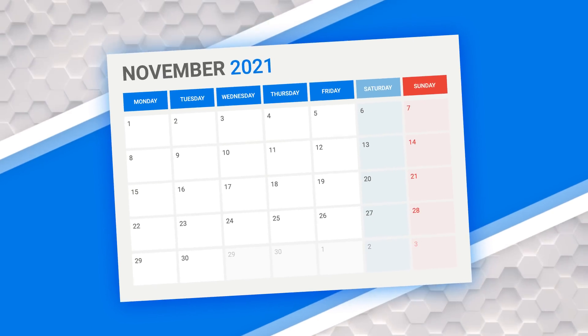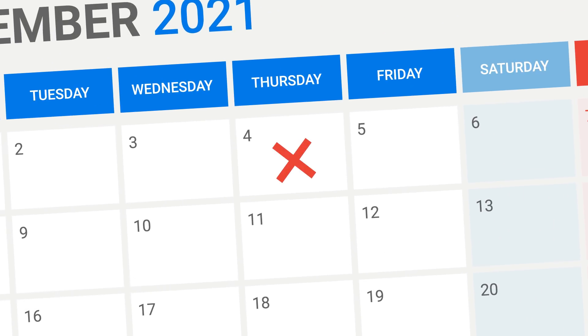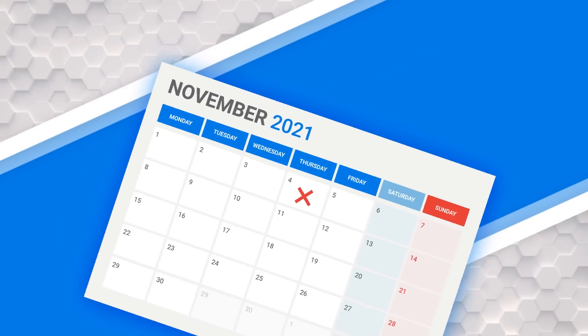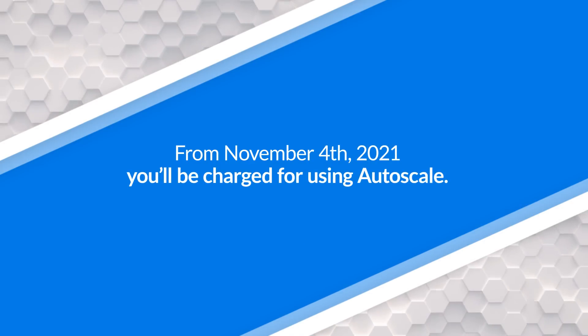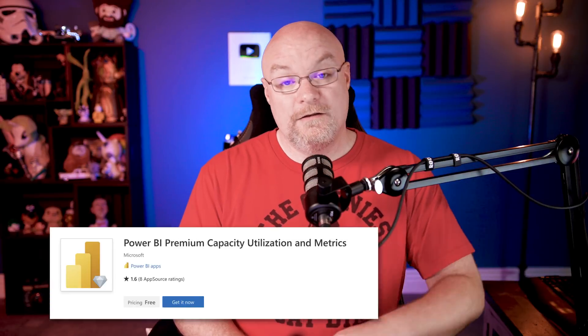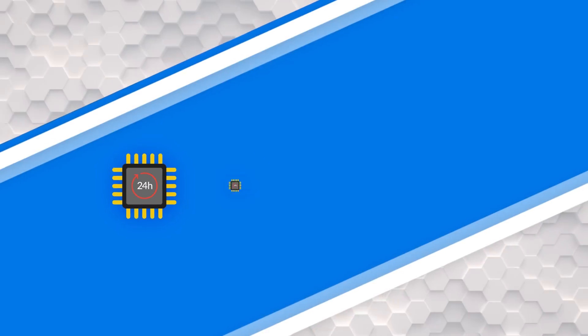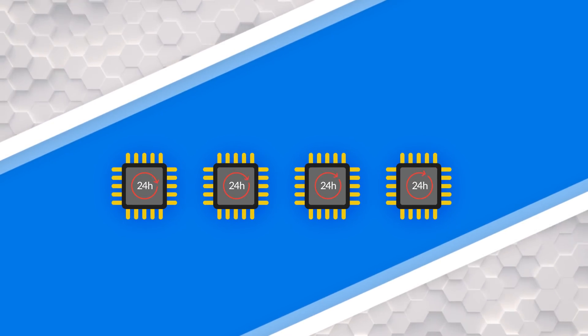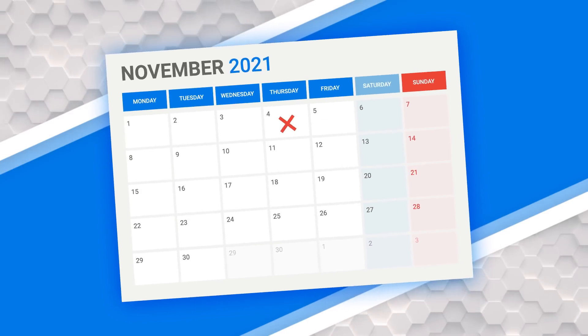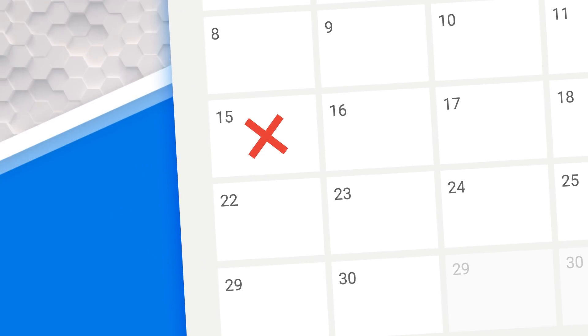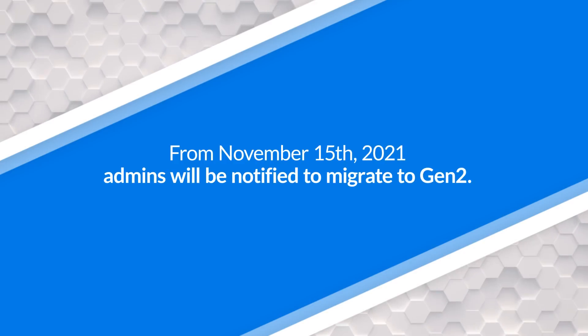Let's talk about some dates. Power BI Premium Gen 2 is now generally available and there are some dates you need to be aware of. First is November 4th, 2021 — that is when charges for auto scale will begin. If you're going over and you've enabled auto scale, you will start incurring charges to your Azure subscription. Take a look in the Premium Capacity Metrics app to see if you're already having some overloads. Every core you get from an auto scale perspective is for a 24-hour period.